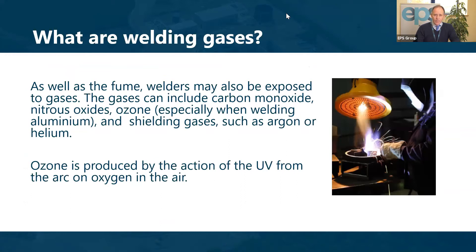You also have welding gases. As well as the fumes, welders may also be exposed to gases, and they can include carbon monoxide, nitrous oxides, and ozone (O3), especially when you're welding aluminium — you have the potential to generate ozone from oxygen. You also have your shielding gases or purges, such as argon or helium. Ozone is produced by oxidizing O2 to O3, and the oxidizing agent is the UV which is produced in the arc when you're welding.